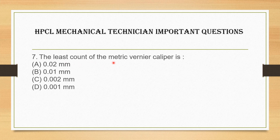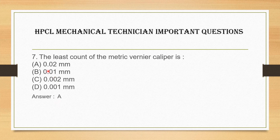Next question: what is the least count of a metric vernier caliper? Options are: A. 0.2 mm, B. 0.1 mm, C. 0.02 mm, D. 0.01 mm. The answer is 0.02 mm. The least count of a metric vernier caliper is clearly 0.02 mm.